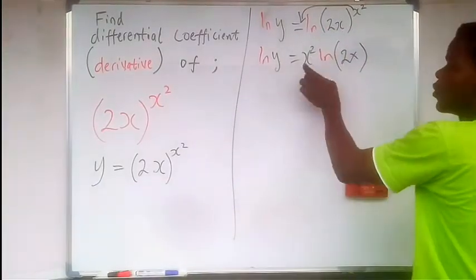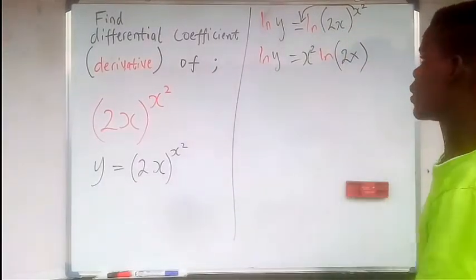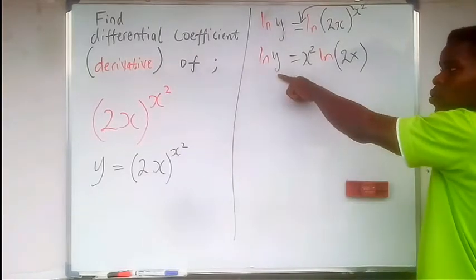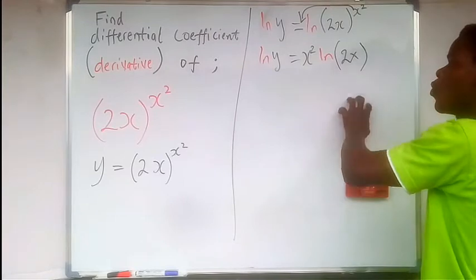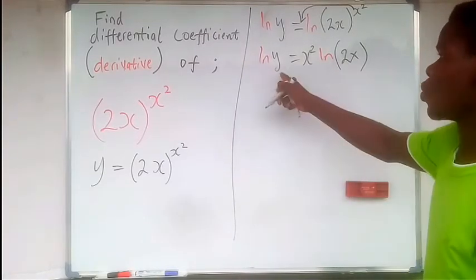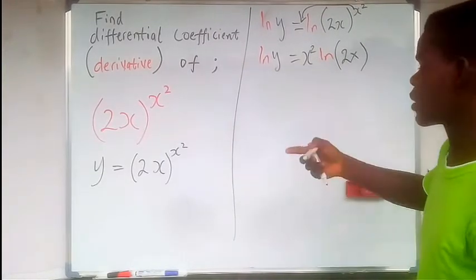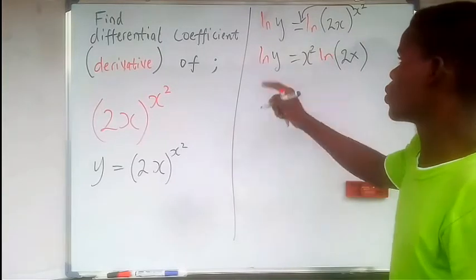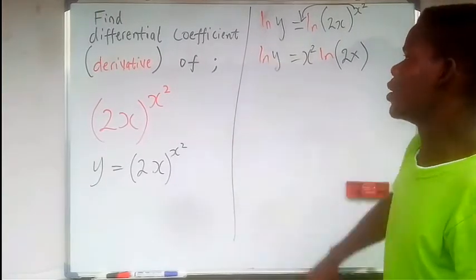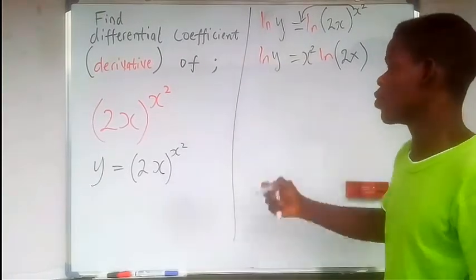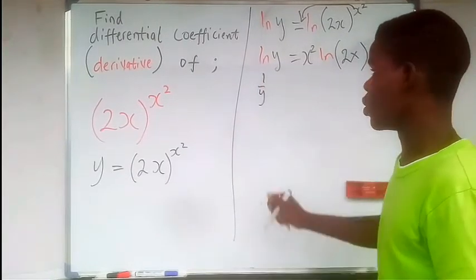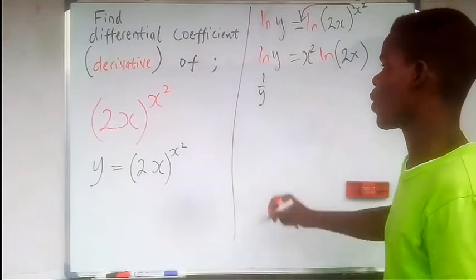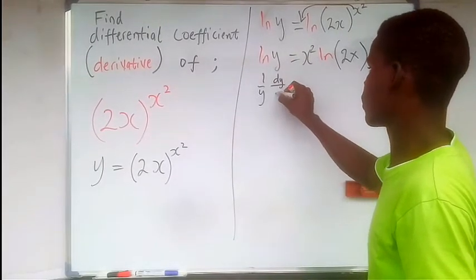Take note that since this is y, the main function, and this is x, the independent variable, we're going to use the implicit function. So on the left-hand side, we're going to use implicit differentiation, and on the right-hand side we use product rule. On the left-hand side, we differentiate this. The derivative of ln of a variable is just one over that variable. So the derivative of ln y is just one over y, dy/dx.